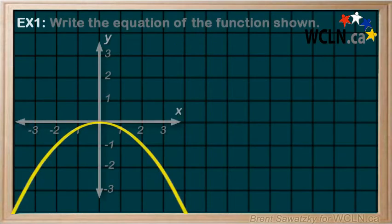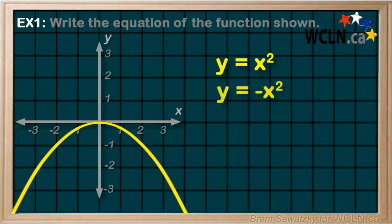Example 1. Write the equation of the function shown in this graph. And we start by recognizing that this is a quadratic function, or degree 2. And we also see it's reflected vertically. So, we can easily put a negative right out front here.